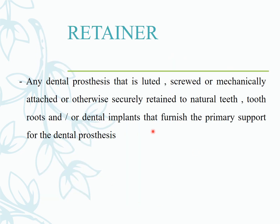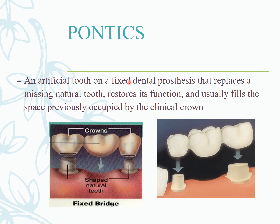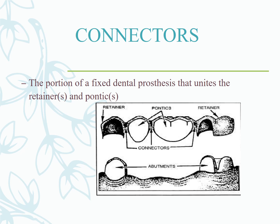A retainer is any dental prosthesis that is cemented, screwed, or mechanically attached to natural teeth, roots, or dental implants, furnishing primary support for the dental prosthesis. A pontic is an artificial tooth on a fixed dental prosthesis that replaces a missing natural tooth, restores its function, and fills the space previously occupied by the clinical crown.